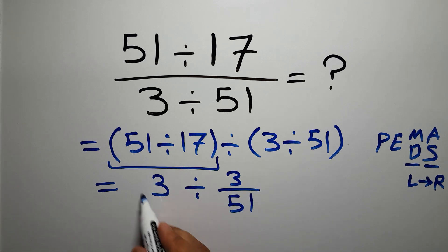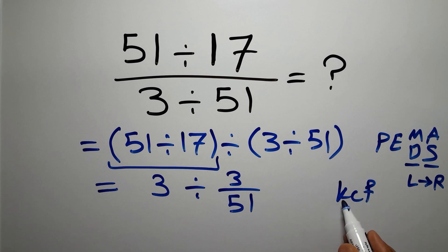Now, 3 divided by this fraction. According to the KCF rule, K stands for keep, C stands for change, and F stands for flip.